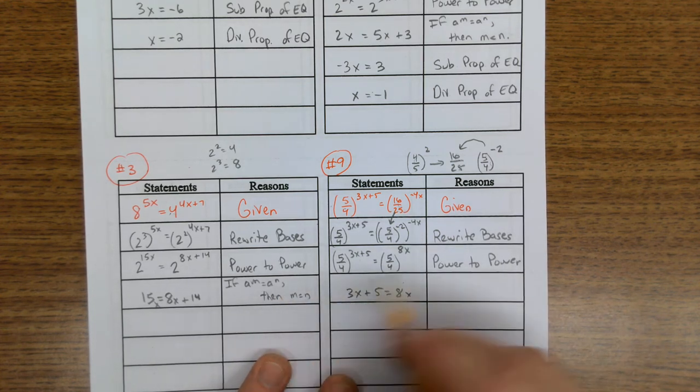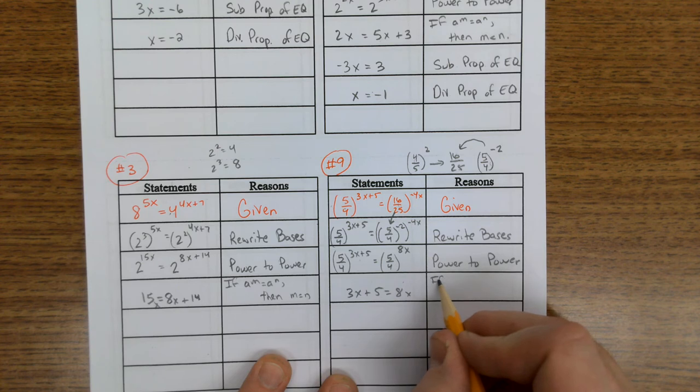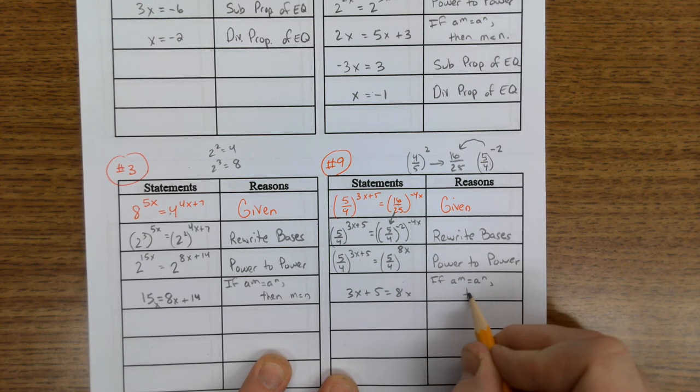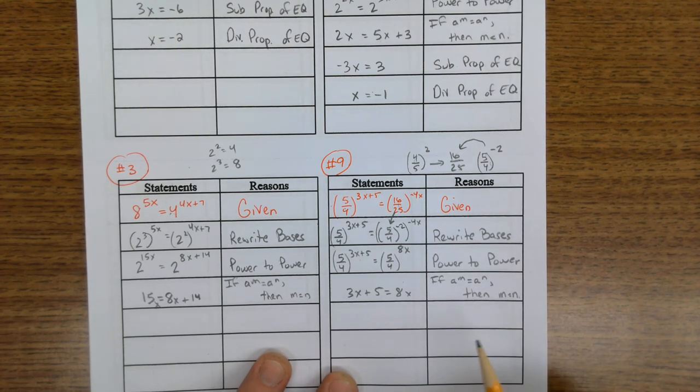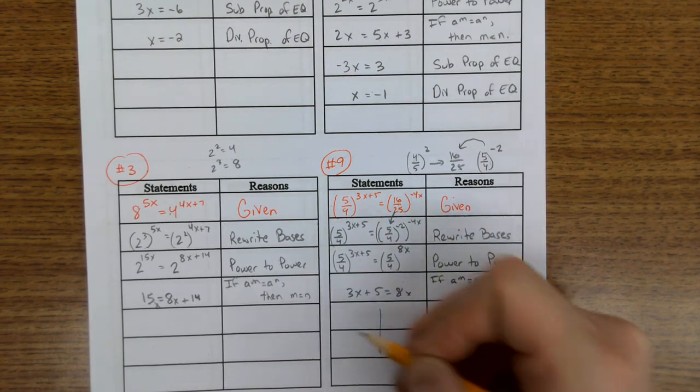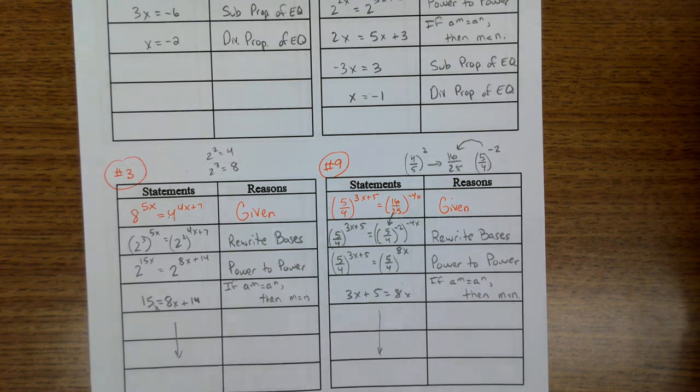That's the same rule here, this if-then statement. If a to the m equals a to the n, then same bases means same exponents. And then you can finish both of those and solve those just like a regular algebra problem.